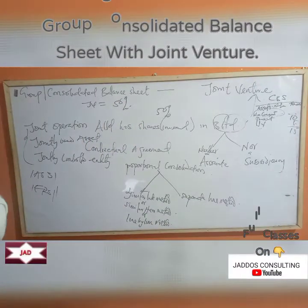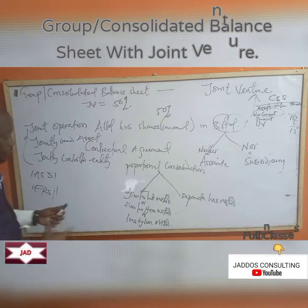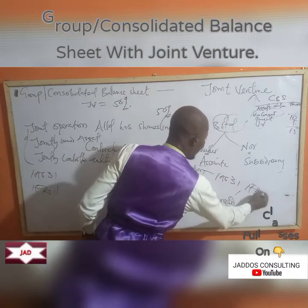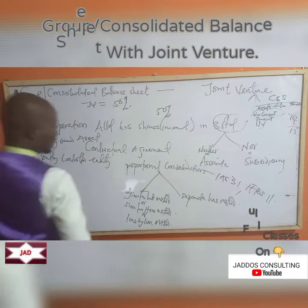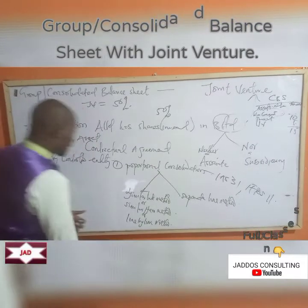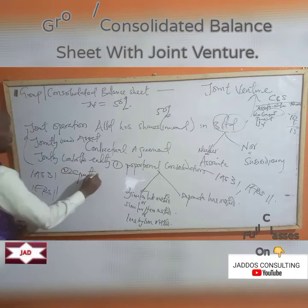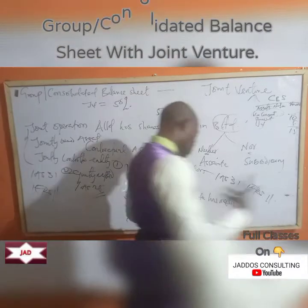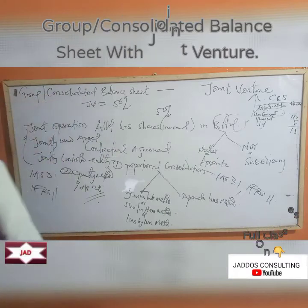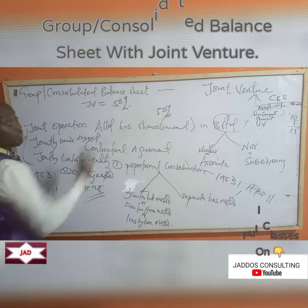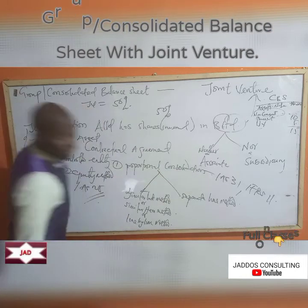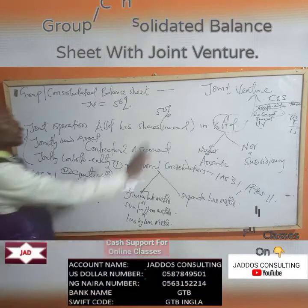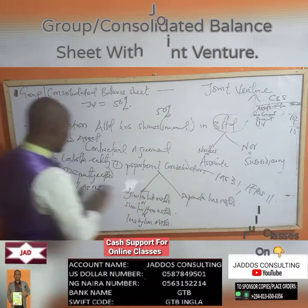That is the first method — proportional consolidation — for joint venture arrangements. You can look at IAS 31 and IFRS 11. The second method is the equity method, which I already explained in the last class. IAS 28 also suggests — in its amended form — that you can use the equity method to report joint venture. So there are two methods: proportional consolidation or the equity method.